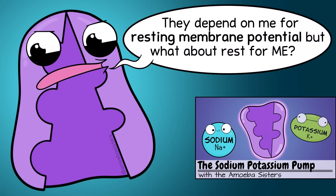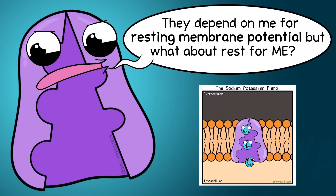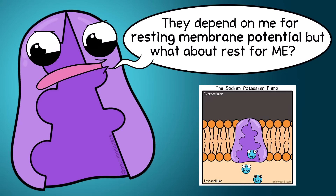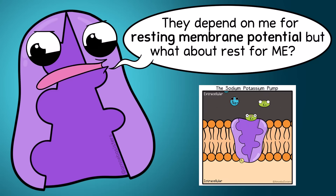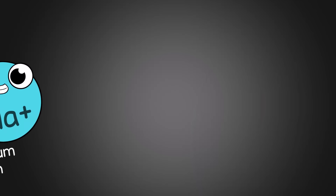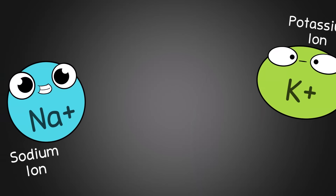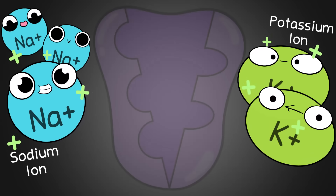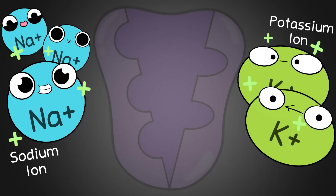We have a video on the sodium-potassium pump — highly recommend watching that before this one. The sodium-potassium pump is critical in getting cells to their resting membrane potential. With the help of ATP, it moves ions against their concentration gradients. As the name implies, those ions are sodium ions (Na+) and potassium ions (K+). Both are positively charged, and the pump moves more sodium ions out than potassium ions in — three sodium out, two potassium in.